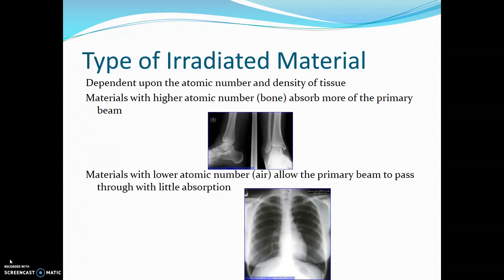Contrast is also dependent upon the atomic number and density of the tissue. Materials with higher atomic number, such as bone, absorb more of the primary beam. Materials with lower atomic number, such as air, allow the primary beam to pass through with little absorption.